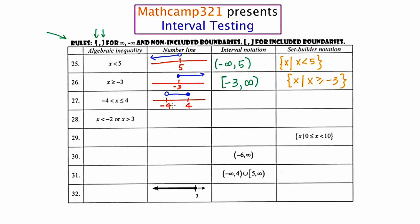Now when I go to interval notation, I scan this blue line from left to right. The blue line starts at negative 4 and keeps going until we get to 4. Because the left boundary is excluded, we're going to use parentheses, and the right boundary is included, so we're going to use brackets. Set builder notation: x such that negative 4 is less than x is less than or equal to positive 4, and then you end it with a brace.